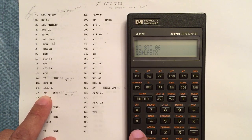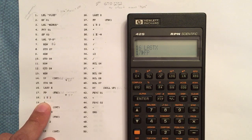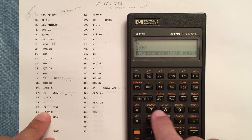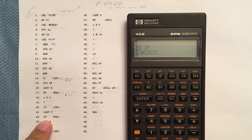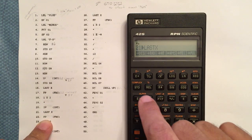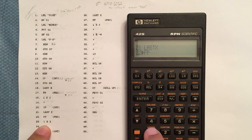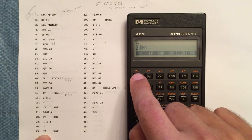It's under the convert menu, fraction 1 times 10 to the second, multiply, integer portion, last X, fractional portion, 1 times 10 to the second, times, integer portion.